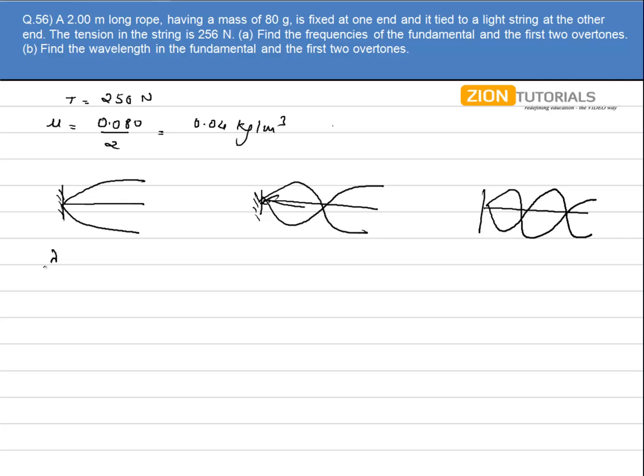So in this case I can write lambda by 4 is equal to L. Here it will be 3 lambda by 4 is equal to L and here it will be 5 lambda by 4 is equal to L. So in each case lambda is equal to 4L, 4L by 3, and 4L by 5.